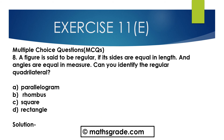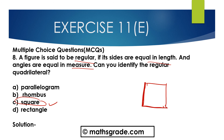Now question number 8, multiple choice: a figure is said to be regular if its sides are equal in length and angles are equal in measure — can you identify the regular quadrilateral? Options are parallelogram, rhombus, square, and rectangle. The answer is square — option C — because all four sides are equal and each angle is equal to 90 degrees.